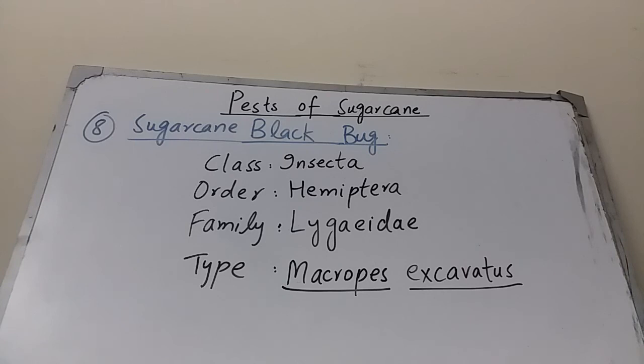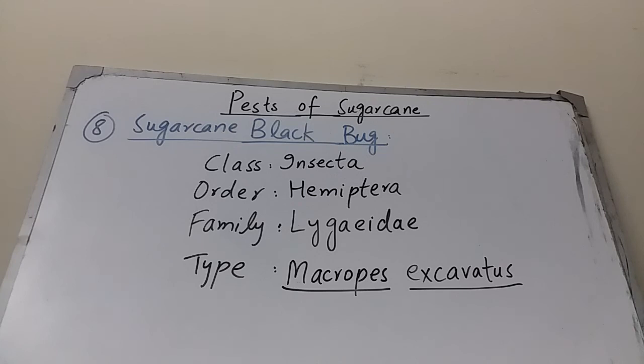The eighth pest is the Sugarcane Black Bug. Systematic position: Class Insecta, Order Hemiptera, Family Lygaeidae, scientific name Macropes excavatus. It is a widely distributed sap-sucking pest. Both nymphs and adults cause damage to the sugarcane crop, and the leaves of affected plants become yellow with brown patches.